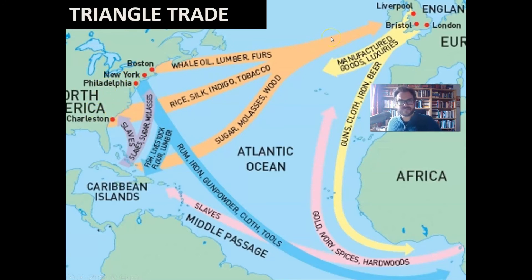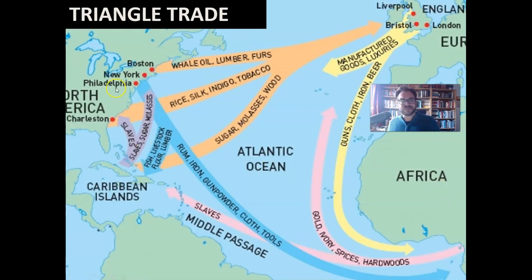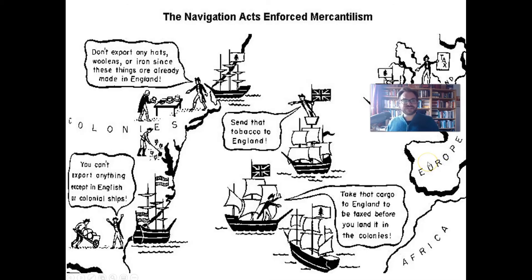Why did colonists have to send goods to Europe? Think about it: if you owned a plantation with cotton, and a large part of the buyers were in Africa — who could then trade it eastward into the Islamic world — why would you send it to England for a lower price instead of selling it directly elsewhere? Why not cut out the middleman? That ties directly to the Navigation Act. Britain wanted a piece of it.